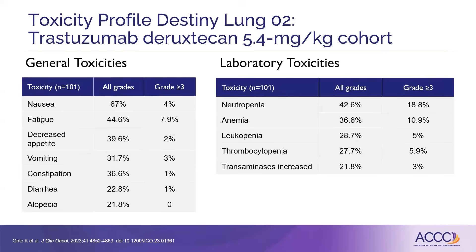You can see the general toxicities on the left-hand side of this slide. A lot of these are typical of what we might see with chemotherapy — things like nausea and fatigue. Over half of people had nausea, and even 4% had severe nausea requiring dose reduction at grade 3 or 4. There's significant fatigue, decreased appetite, and GI effects including both constipation and diarrhea. On the right-hand side you see laboratory toxicities, consistent with that chemotherapy payload delivered to the tumor cell.